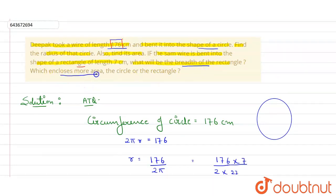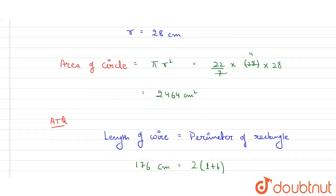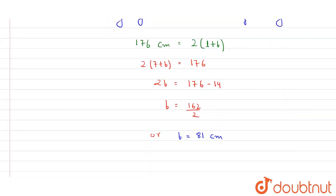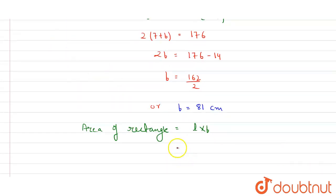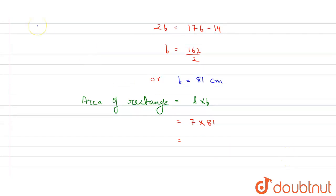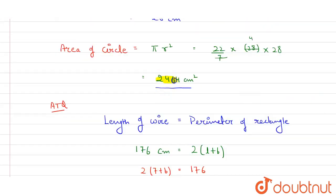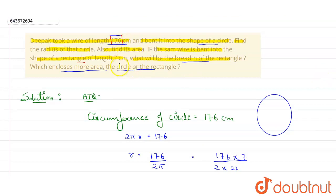Now I have to find what encloses more area, circle or rectangle. Area of circle was 2464. I have to find the area of rectangle now to check. Area of rectangle is length into breadth. We have both quantities, length is 7 and breadth is 81, so it will be 567 centimeter square. Here area of rectangle is 567 and circle was 2464, so clearly circle encloses more area. This is our final answer.